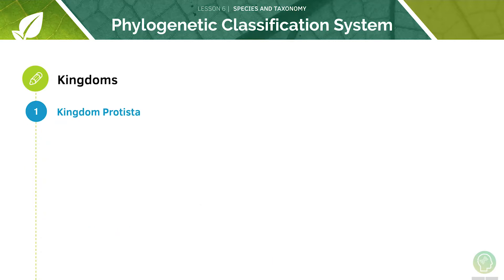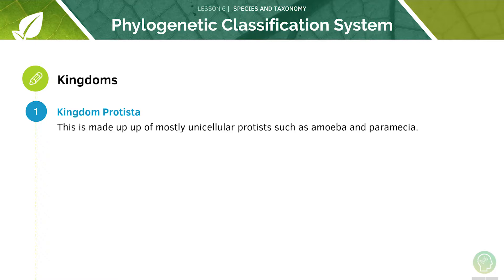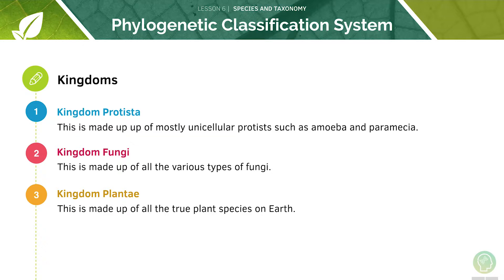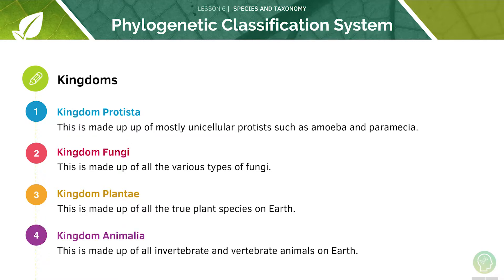Each of the domains can be broken down into different kingdoms. In domain Eukarya there are four major kingdoms. The kingdom Protista, which has unicellular protists such as amoeba. The kingdom Fungi, made up of different types of fungi. The kingdom Plantae, made up of the true plant species on earth. And the animal kingdom, made up of all the animals we can find on earth.